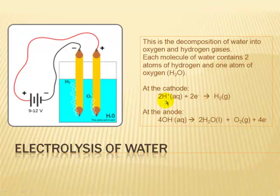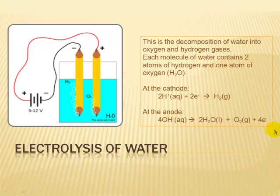The water splits into hydrogen ions, which are positive, and hydroxide ions, which are negative — you can see there are two hydrogens and one oxygen. At the anode, the hydroxide ions are attracted towards the positive electrode and give up four electrons, producing two molecules of water and oxygen gas.